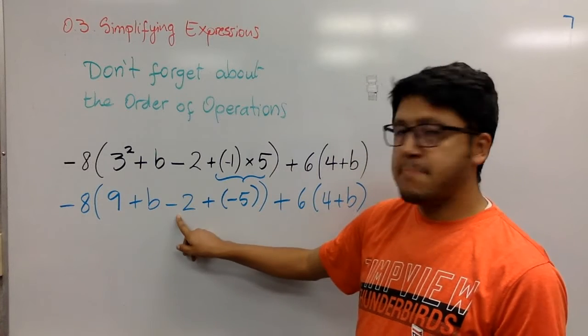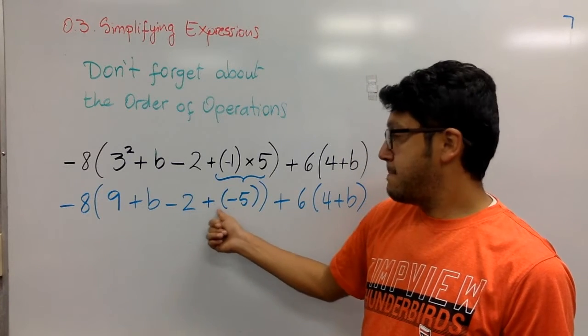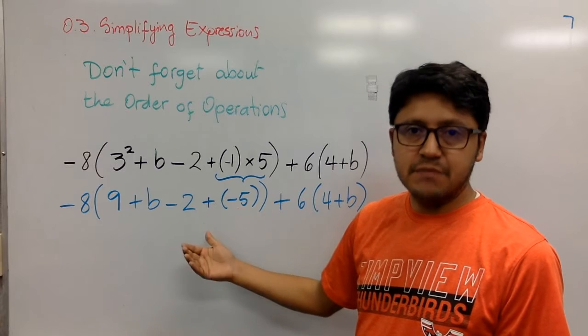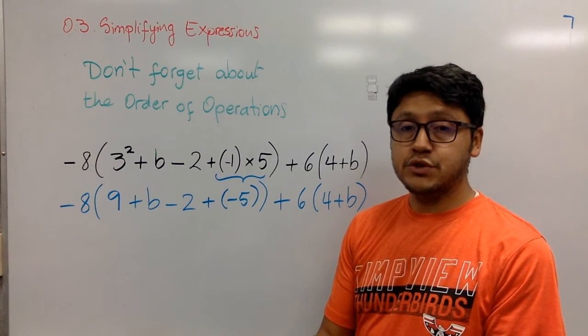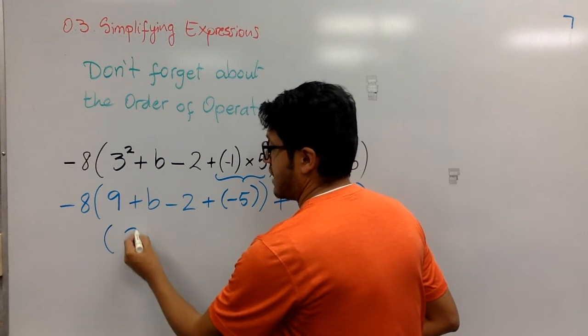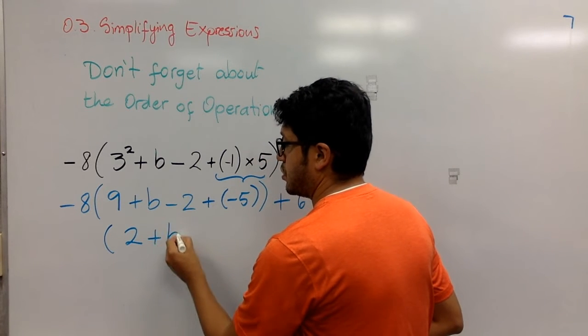We have 9 minus 2 is 7. Plus a negative 5 is the same thing as saying minus 5. So that's going to be 9 minus 2 is 7, minus 5 is 2. So I have 2 plus b.